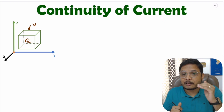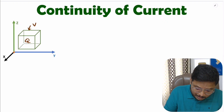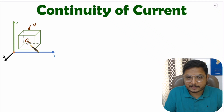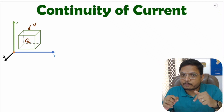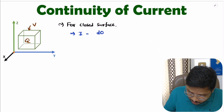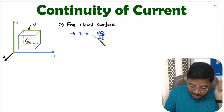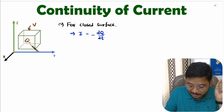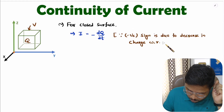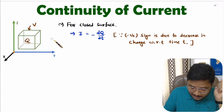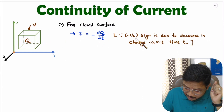The flow of current depends on the rate of change of charge with respect to time. Initially, charge inside the volume was Q. After expansion of volume, in the given volume V, charge will decrease. So there will be flow of charge, and rate of change of charge with respect to time is current: I = −dQ/dt. The negative sign is because the charge is decreasing with respect to time.